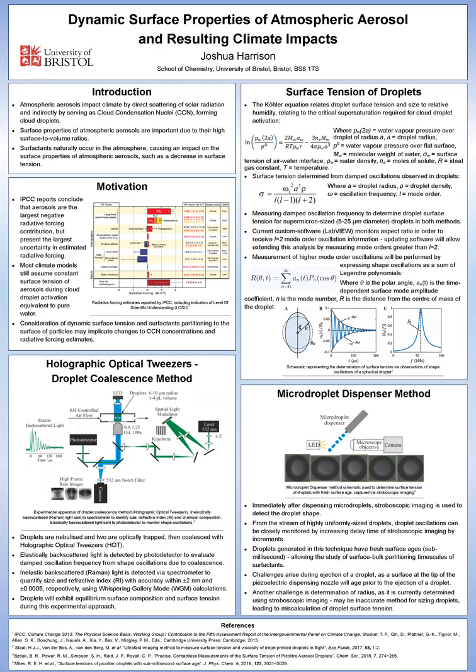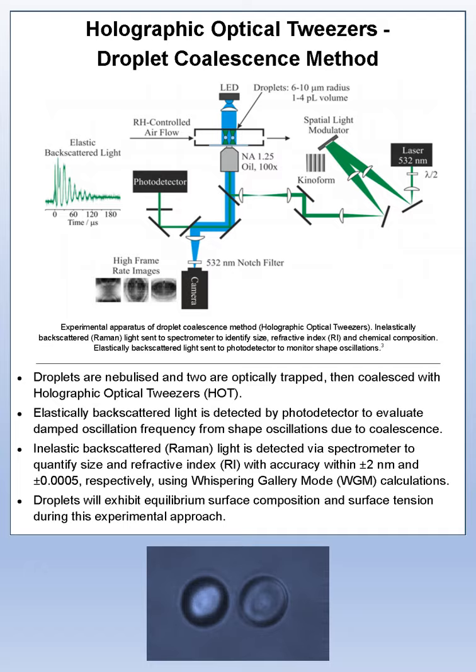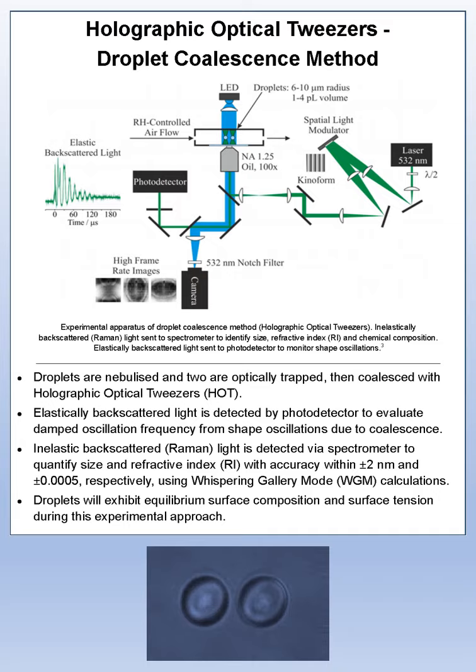Here are the experimental methods used to determine oscillation frequency of the droplet species. For the first experimental approach, droplets are nebulized into a chamber, two are optically trapped and then coalesced into one. Elastic backscattered light is detected to evaluate oscillation frequency instigated from the event of coalescence. Raman spectroscopy is coupled with this technique to accurately quantify size and refractive index of the droplet. During the experiment, droplets will exhibit equilibrium surface composition and surface tension.